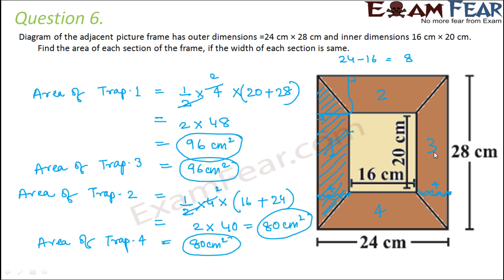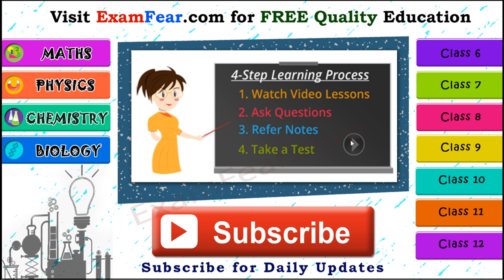So the four sections have areas: trapezium 1 = 96 cm², trapezium 2 = 80 cm², trapezium 3 = 96 cm², and trapezium 4 = 80 cm². The key in this problem was finding the height of each trapezium, which is the width of the frame. Outer length 24 minus inner length 16 gives 8, and dividing equally gives width = 4 cm on each side.